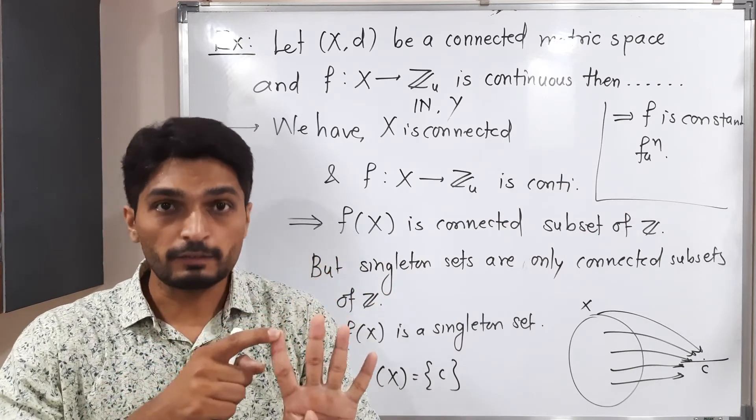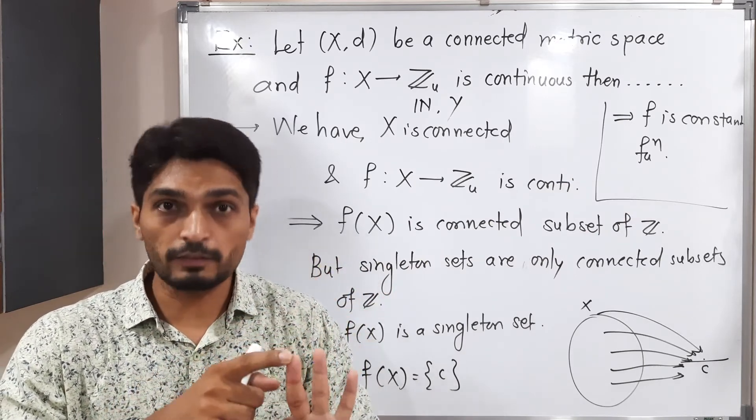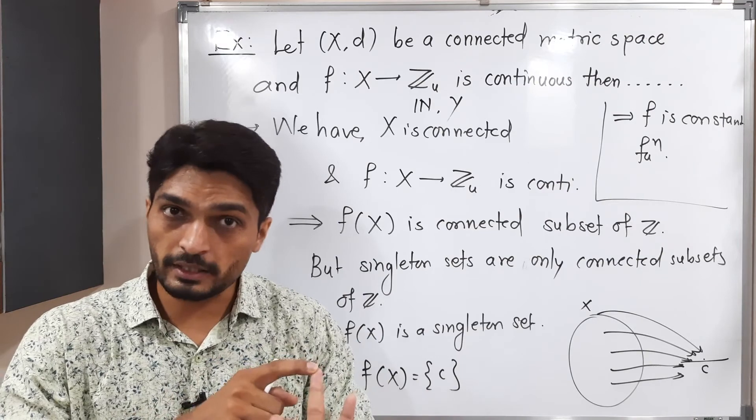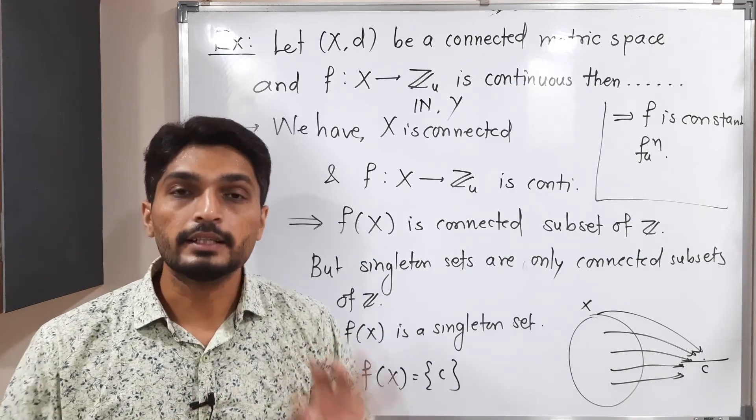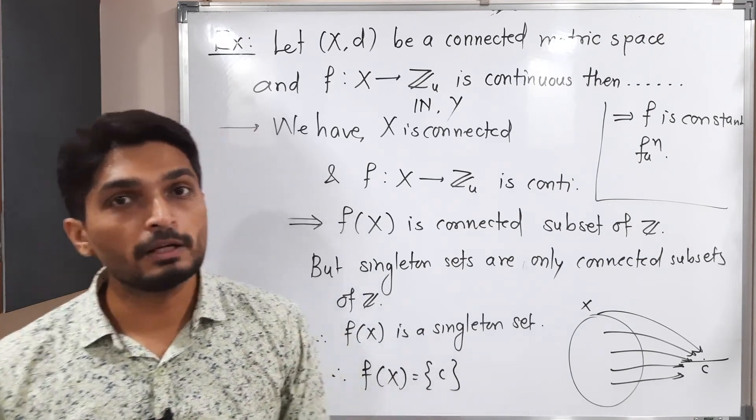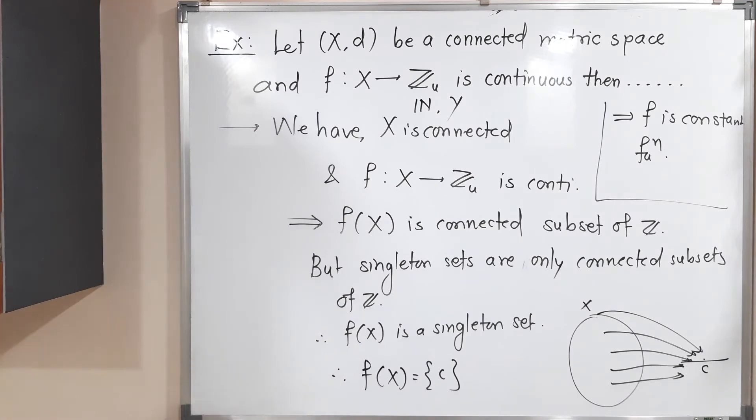That means if co-domain is Z, if co-domain is natural number, if co-domain is discrete metric or if co-domain is a finite set, then also our conclusion is same. The function is a constant function. Make a screenshot of it and then we will stop. Thank you.